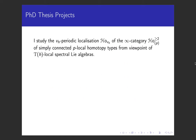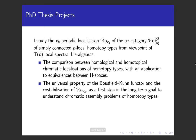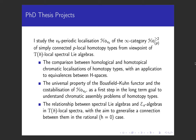In my PhD thesis, I study the VH periodic localization of the infinity category of simply connected P-local homotopy types from the viewpoint of spectral Lie algebras. In the first part of my thesis, I investigate the subtle relationship between unstable homological and homotopical chromatic localizations. I work out the universal property of the Bousfield-Kuhn functor, which relates to the co-stabilization of the infinity category of VH periodic homotopy types. Currently, I'm studying the relationship between spectral Lie algebras and TN algebras in TH local spectra, hoping to generalize a known connection between them in the rational case.